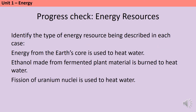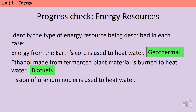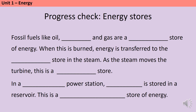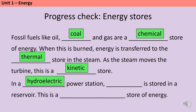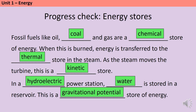For the progress check: the type of power plant that uses energy from the Earth's core is a geothermal power plant; ethanol is burned when using biofuels; and the fission of uranium nuclei refers to a nuclear power plant. You should also be able to link energy resources to stores and transfers. Fossil fuels like oil, coal, and gas are a chemical store of energy. When burned, energy is transferred to the thermal store in the steam. As the steam moves the turbine, this is a kinetic store. In a hydroelectric power station, water stored in a reservoir is a gravitational potential store of energy.